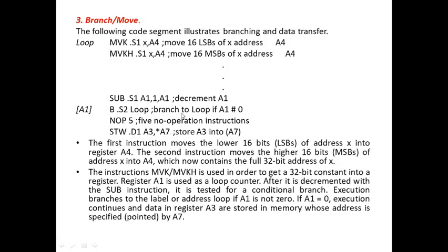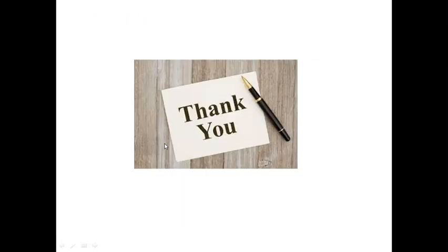So it branches to loop if A1 is not equal to 0. This loop is decremented again and again until A1 becomes 0. Once it becomes 0, we perform the final operation and the final value in A3 is stored into the memory location pointed to by A7. Thank you.